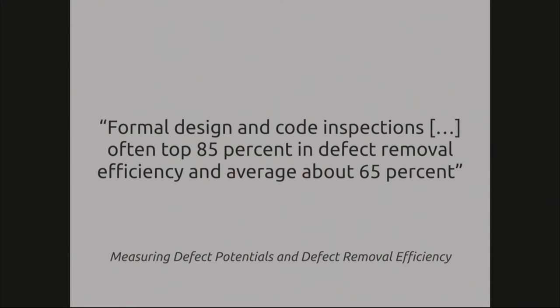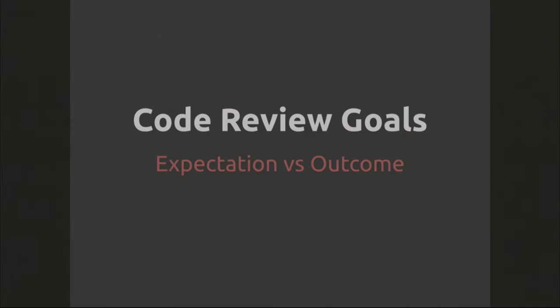Finally, from a paper called 'Measuring Defect Potentials and Defect Removal Efficiency' — academic names are great — they found that formal design and code inspections often top 85% defect removal and average around 65%. This is a huge number, and it's from an actual academic paper with shared data, so there's quite a lot of method behind these numbers. Hopefully you're all convinced now to do Code Review, or as most of you are doing it anyway, we can move on.